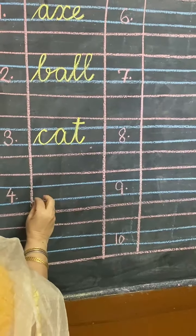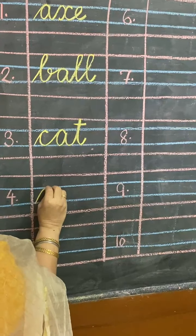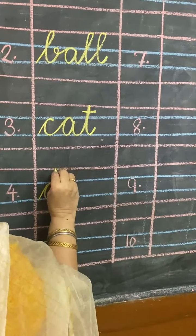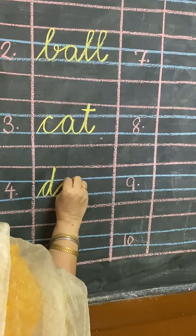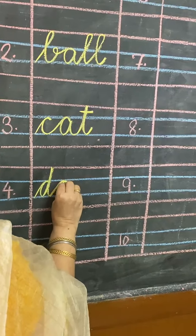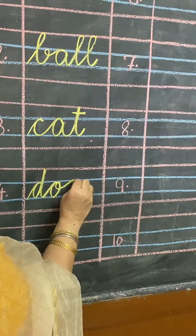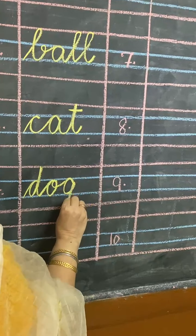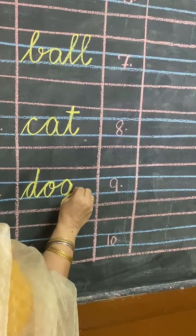Number 4, D for Dog. D will come in upper three lines. O will come in two middle lines. D, O, G — dog.